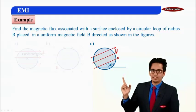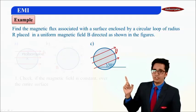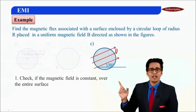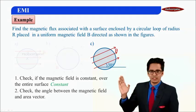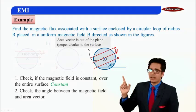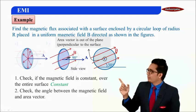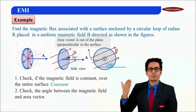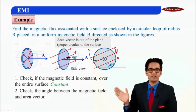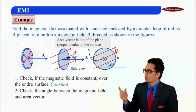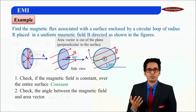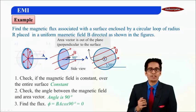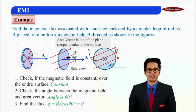Let us take this last situation — it is a tricky one. The 30° shown in the figure is irrelevant because the angle between B and the area vector is actually 90°. B is constant over the entire surface. Any line drawn in the plane — whether at 30°, 0°, or 90° — will be perpendicular to the area vector. So flux = BA cos 90° = 0. Thank you.